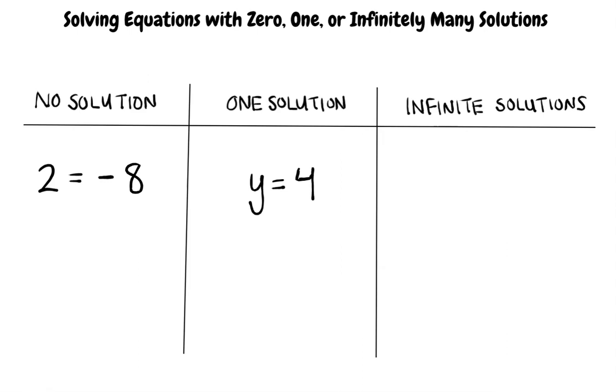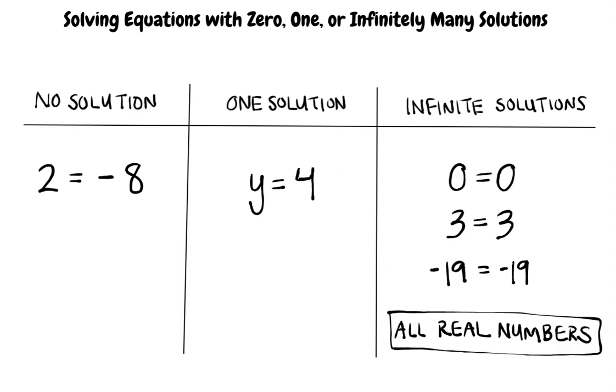The second possibility is that you will find a specific value for your variable when you solve the equation, like y equals 4. Last, if you have, for example, zero equals zero, 3 equals 3, or negative 19 equals negative 19, then your solution will be all real numbers, since any real number used in place of the variable causes the equation to be true.